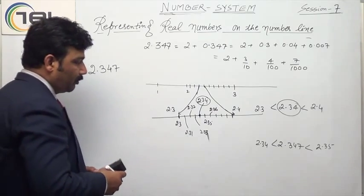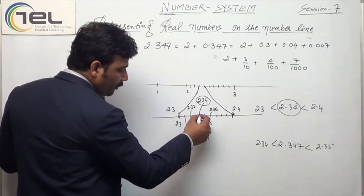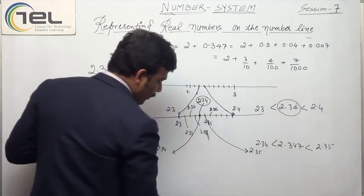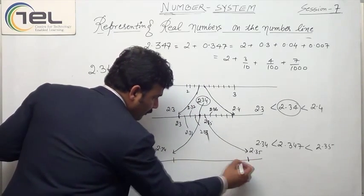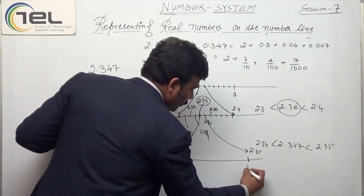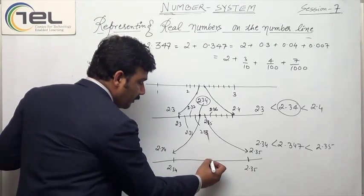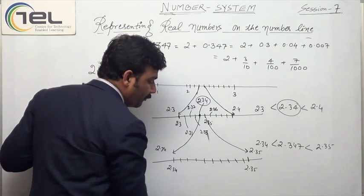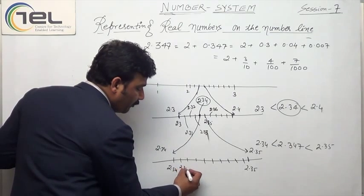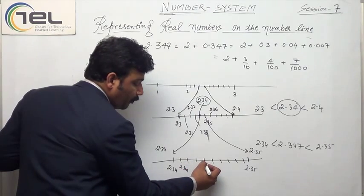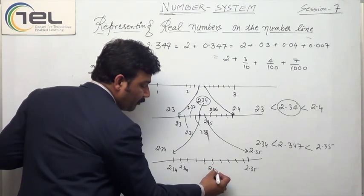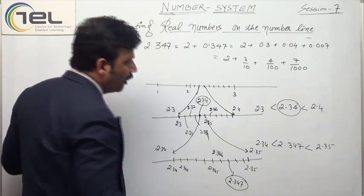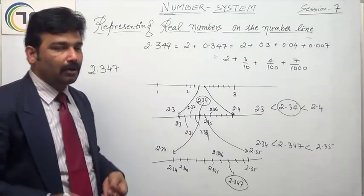This will lie between this one. I have 2.34 here, and this is 2.35. I will just magnify them like this: 2.341, 2.342, 2.343, 2.344, 2.345, 2.346, and this will be representing 2.347. So this is how I will represent any real number on the number line — just by elaborately magnifying, magnifying and magnifying them to conclude to the result.